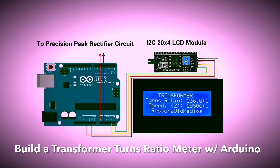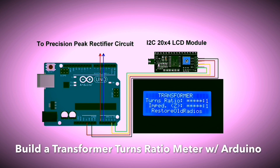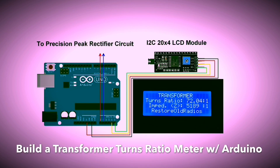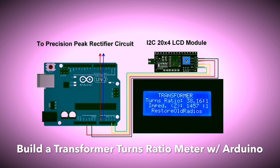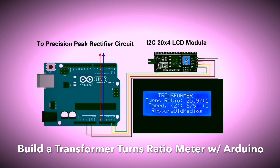Let's build a simple meter using our Arduino that lets us measure or calculate the transformer turns ratio and convert that into impedance ratio. Recall that an output transformer or any other transformer by itself has no impedance. We'll calculate impedance using the turns or voltage ratio. The load impedance of the secondary is what's reflected back to the primary. We can take the actual voltage measurements or the turns ratio and calculate the impedance ratio by squaring those results.